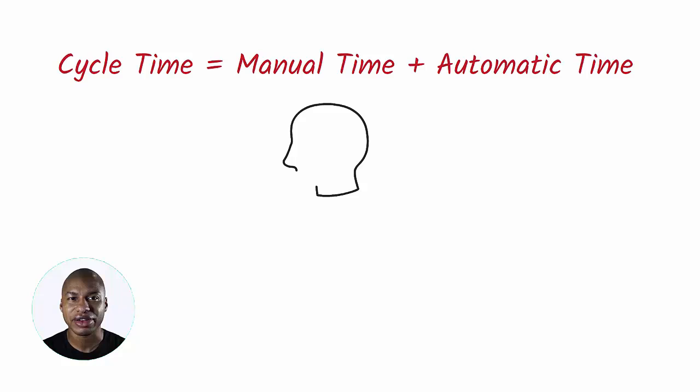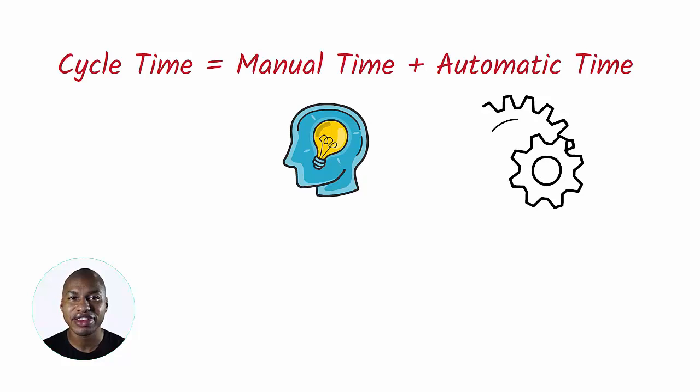By manual time, I mean the time of the operation in which the man touches the product. By automatic time, I mean the time in which the man does not touch the product, and it is only the machine that works without any human intervention.